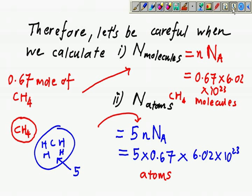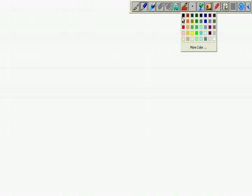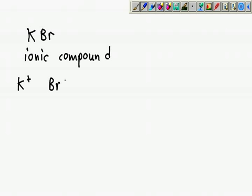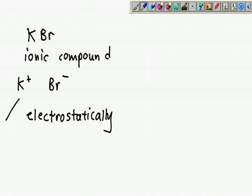Another example: what if you have KBr? Is KBr an ionic compound? When we're dealing with K+ and Br-, they are attracted to each other electrostatically. One is positive charge, another is negative charge. So I consider one ion here and another ion here, so total ion is 2 ions.